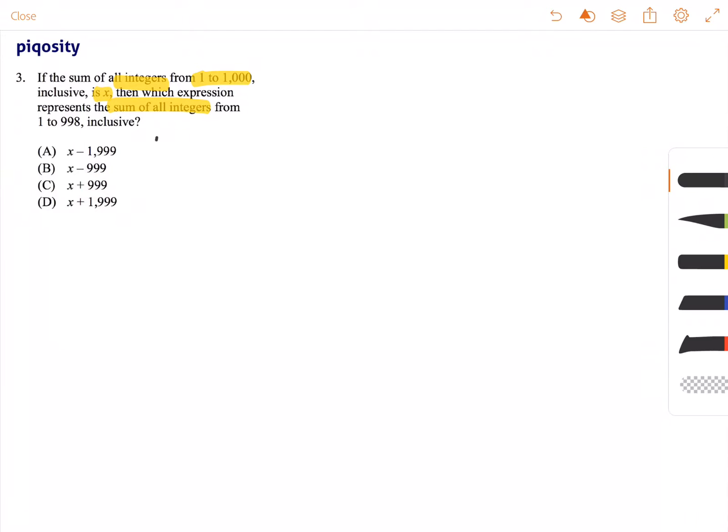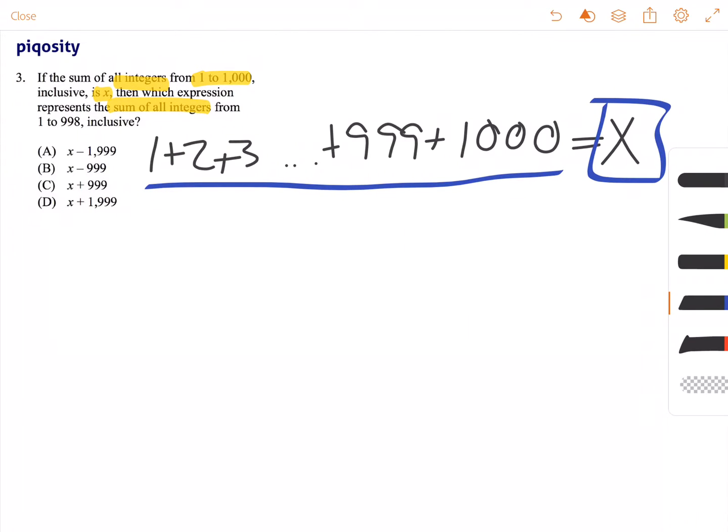So you could write this as 1 plus 2 plus 3 dot dot dot plus 998 or 999 plus 1,000 equals, that's the is part, x. So this is what that would look like, so all of these numbers added together are x, or is x.